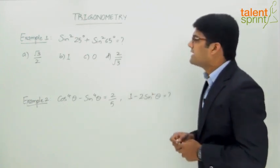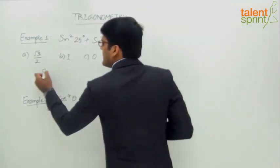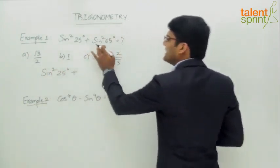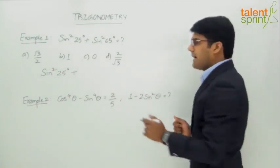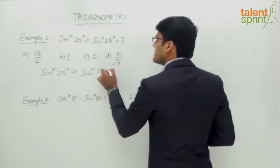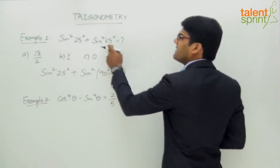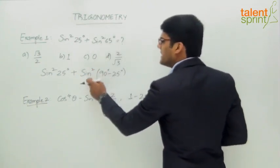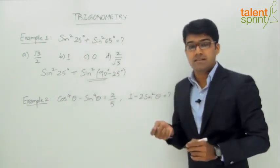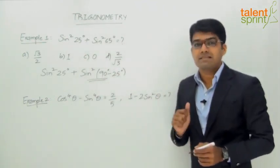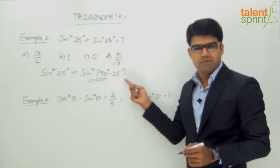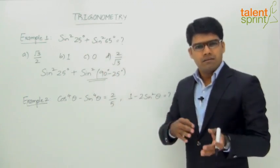Let us see what can be done here. Let us take sin²25°, and now look at sin²65°. This can be expressed as sin²(90° - 25°) — yes, 90 minus 25 is 65. So sin²65° can be taken as sin²(90° - 25°). We know that the trigonometric ratio changes for 90° ± θ, so sin²(90° - 25°) becomes cos²25°, because 90 minus θ is in the first quadrant and sine becomes cosine.